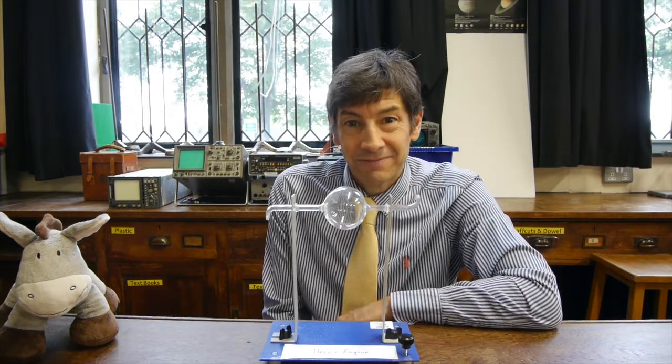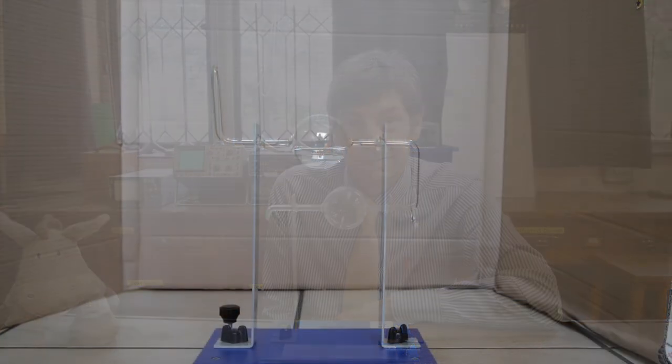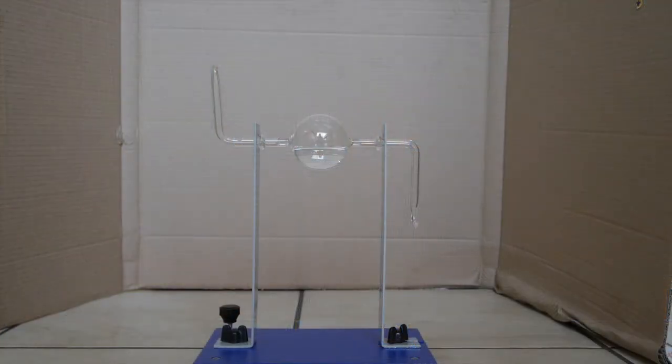So, what we'll do now is I'll get this set up, and I'll show you what it does. We've got our little Hero's Engine set up now. What I do is I use distilled water, or deionized water from the chemistry department, and I suck the water in through one of the arms of the Hero's Engine. That seems to be the easiest way to fill it up.